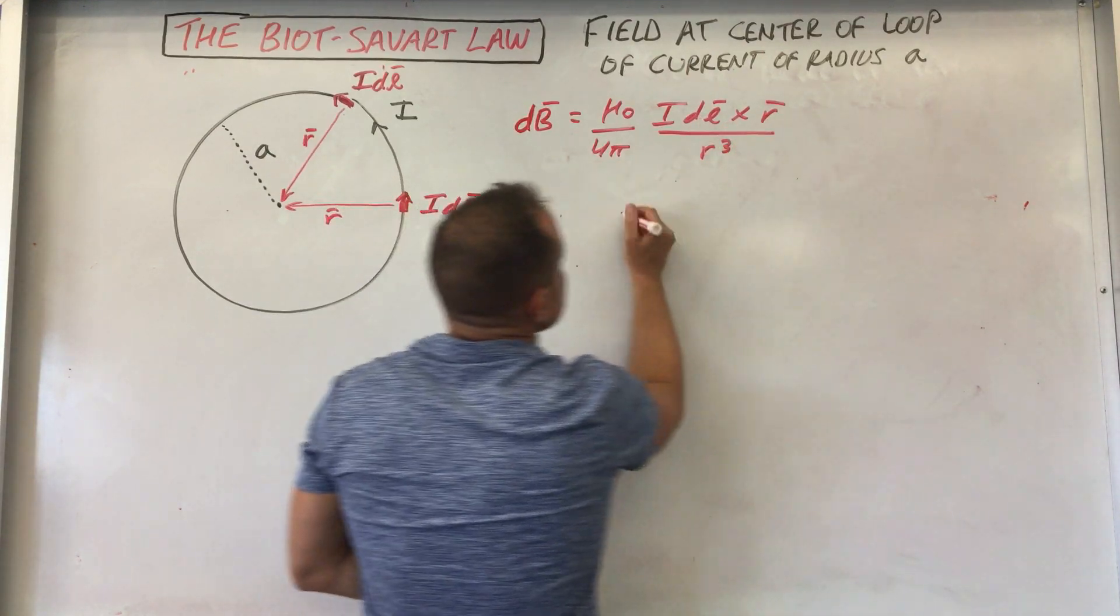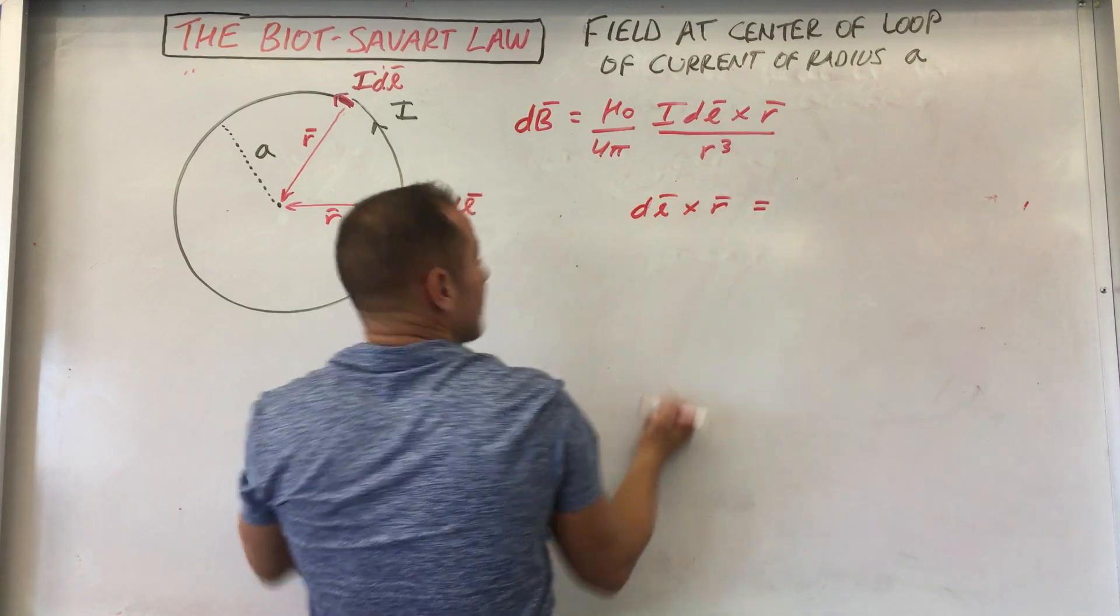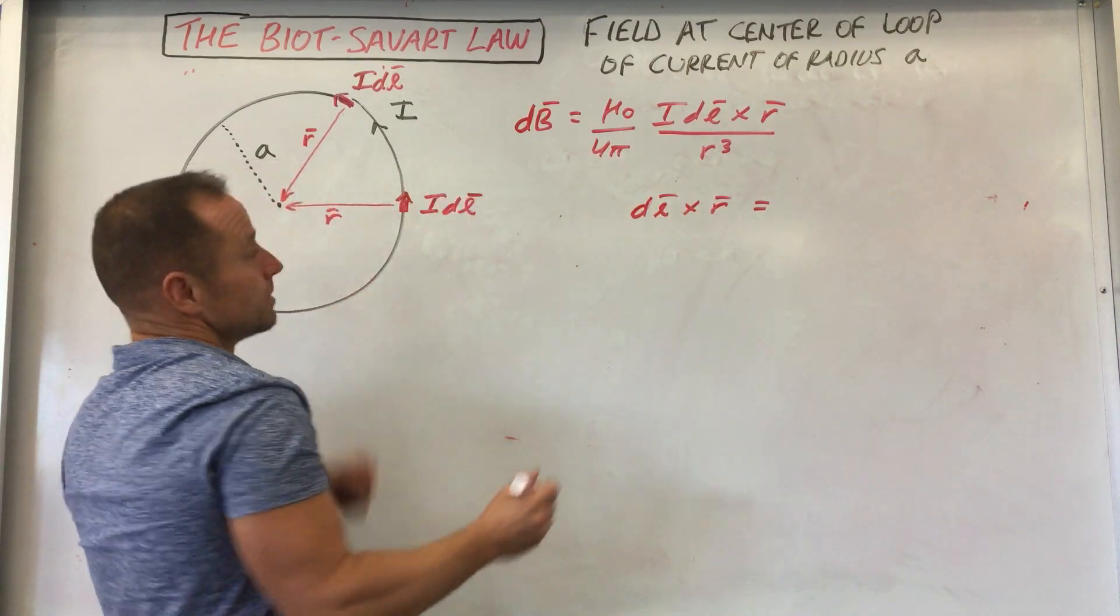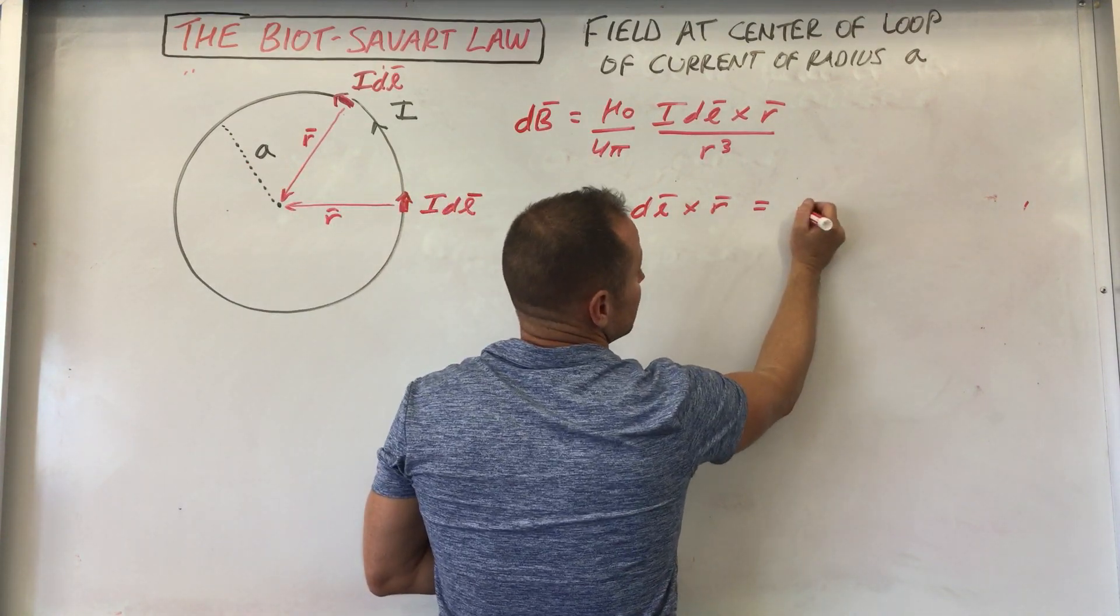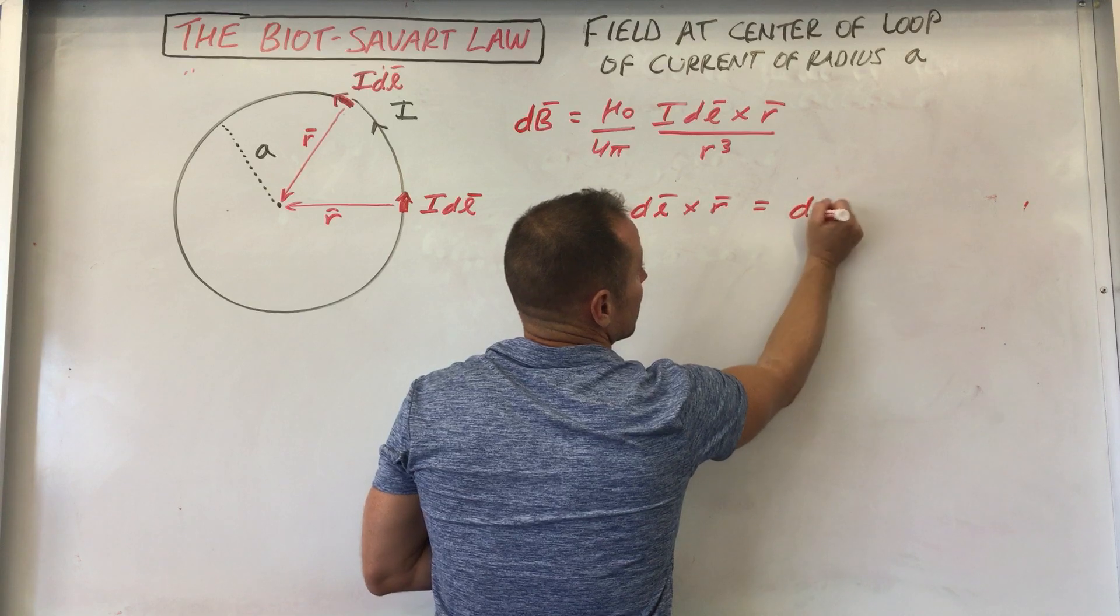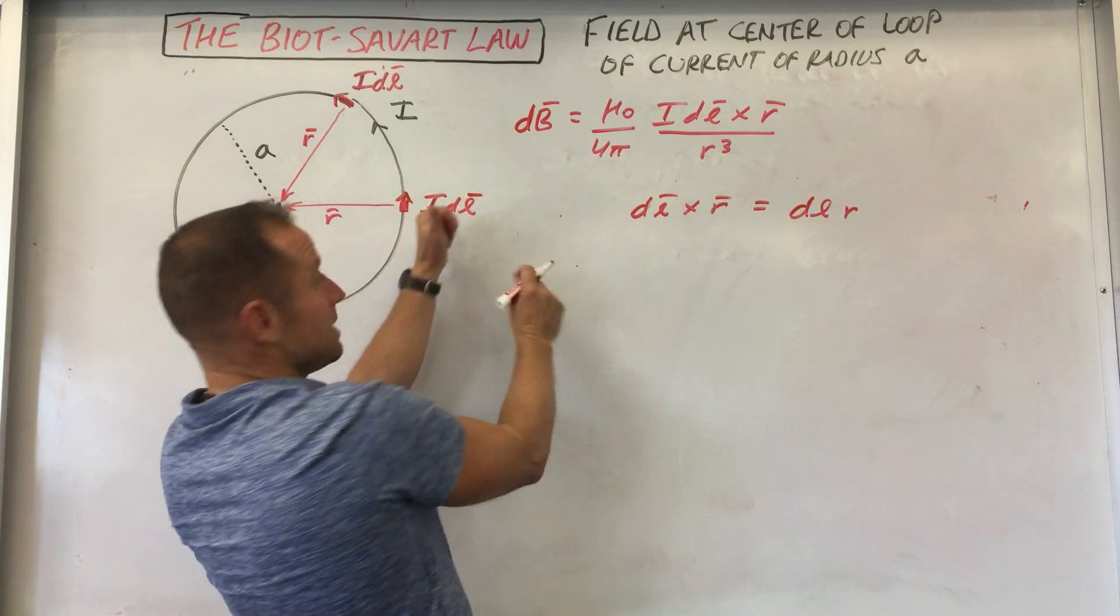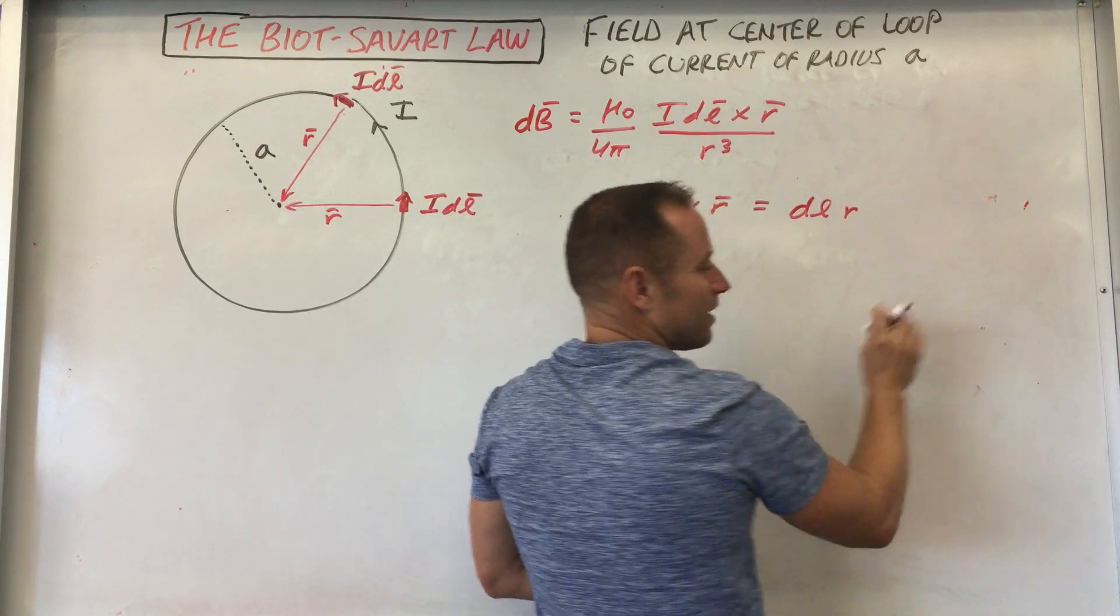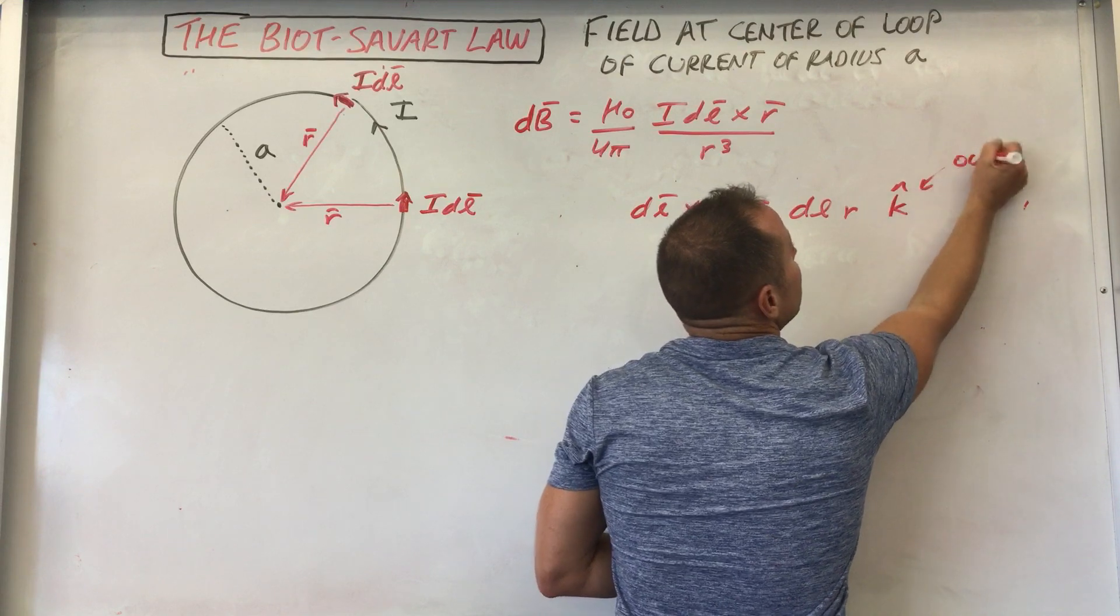So a couple things about this. So DL cross R vector, first of all, they're perpendicular to each other. So the magnitude of this thing is just going to be DL times R. And then the direction is going to be out of the page or in the K hat or Z hat direction. So K hat or out of page.